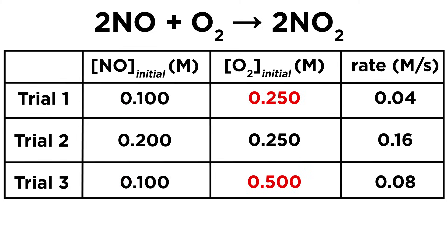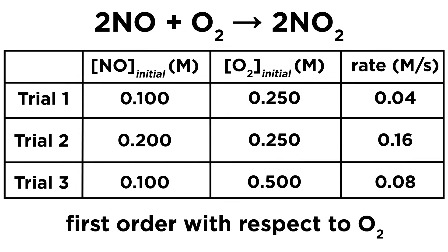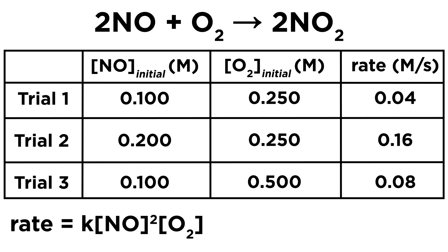If we compare trials one and three, NO stays the same but O2 doubles. There the rate doubles, so the reaction must be first order with respect to O2. So this must be the rate law. The reaction orders happen to match the stoichiometric coefficients but this is a coincidence. It won't always be the case.